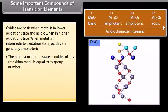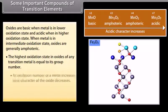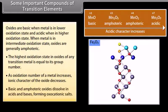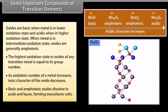The highest oxidation state in oxides of any transition metal is equal to its group number. As the oxidation number of a metal increases, the ionic character of the oxide decreases. Basic and amphoteric oxides dissolve in acids and bases, forming oxocationic salts.